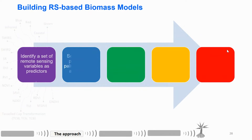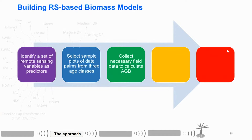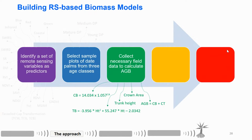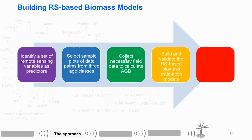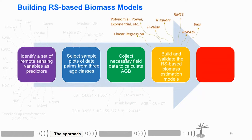The second step is selecting the date palm age classes based on three age stages: mature, medium, and young. The third step is to calculate the biomass in the field using the allometric equation that we built. Then we have the biomass and the remote sensing variables, and we run a regression analysis in order to build and validate the remote sensing biomass model.